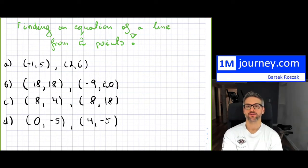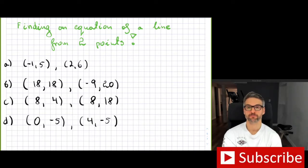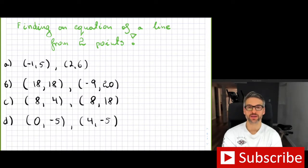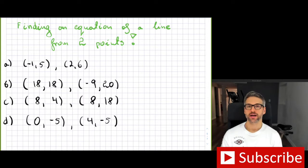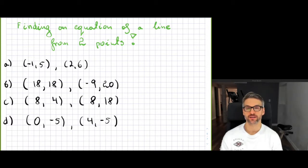Finding an equation of a line from two points. We have four examples here and I'm going to show you what the process is. The process is actually simple if you understand the equation of the line, how to find a slope, and then the y-intercept. If you take the first example, you have basically two points, and that's really all you need to ever find the equation of a line in two dimensions.